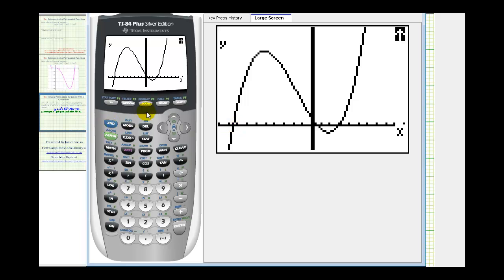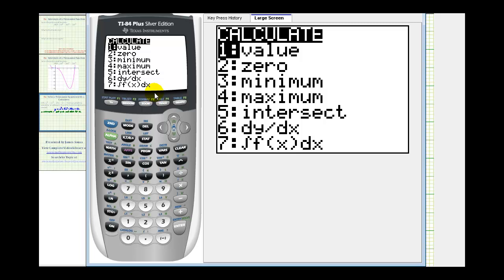To find the x-intercepts on this calculator, we'll press second trace for the calculation menu. And then we're going to look for the zero of the function, which will be our x-intercept. So we select option two.